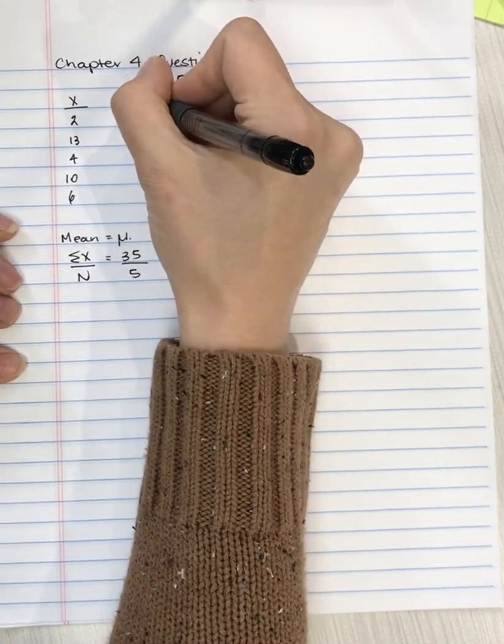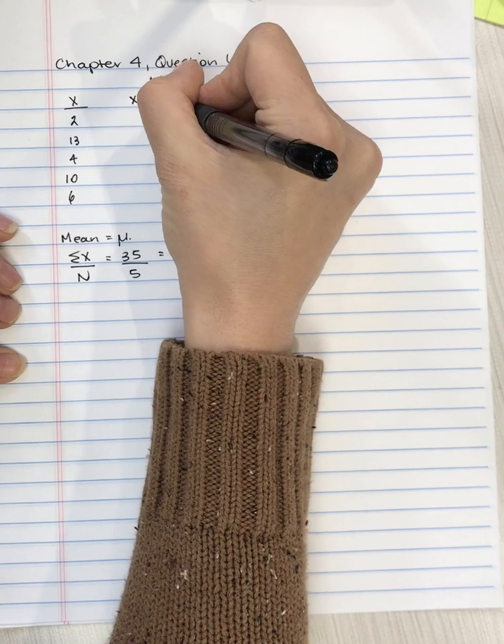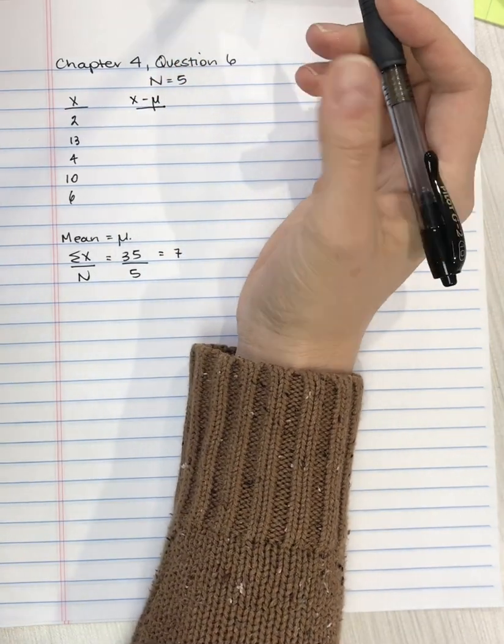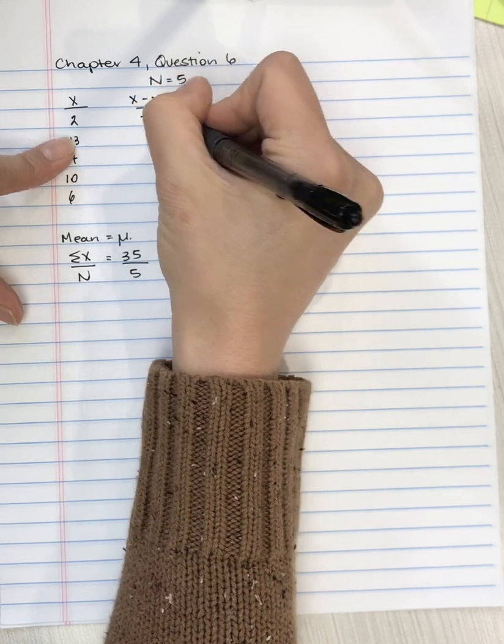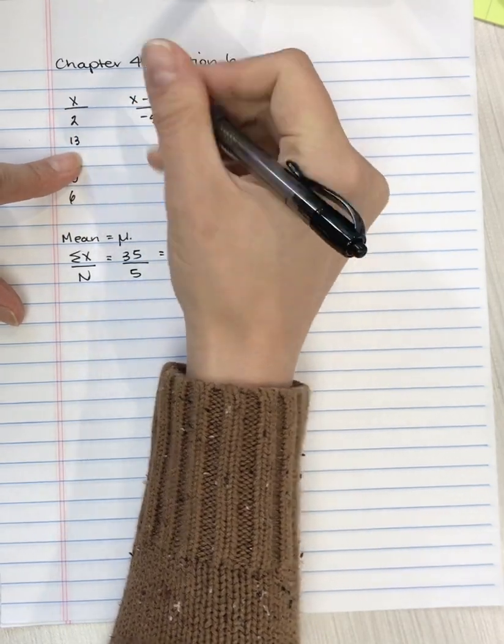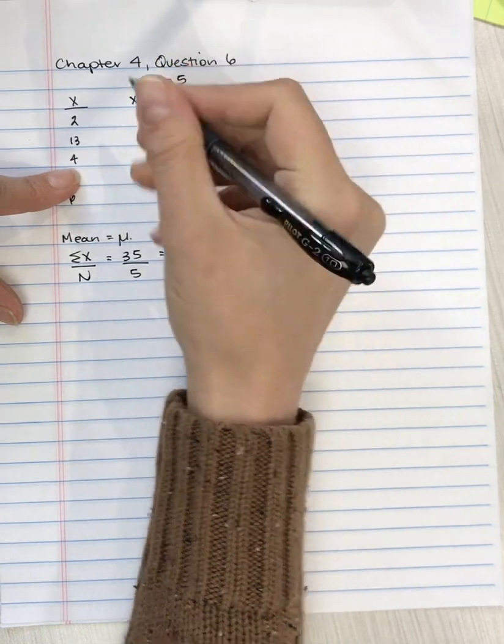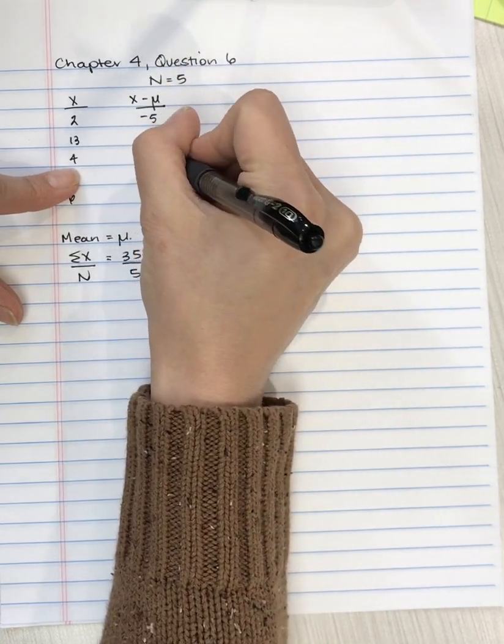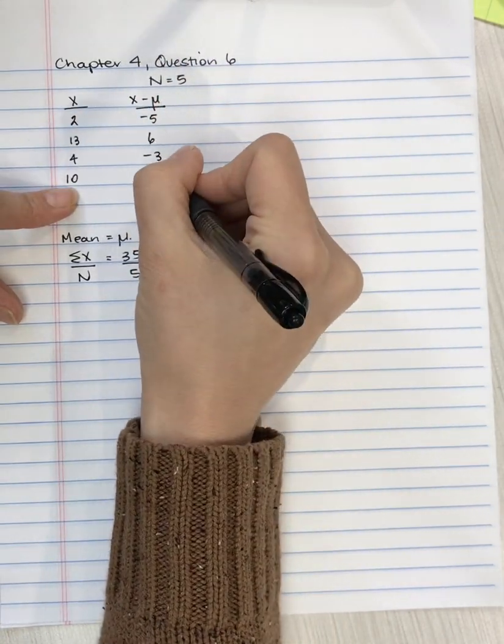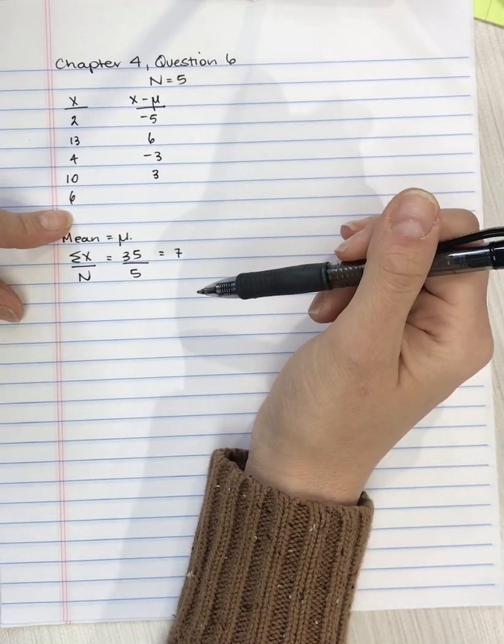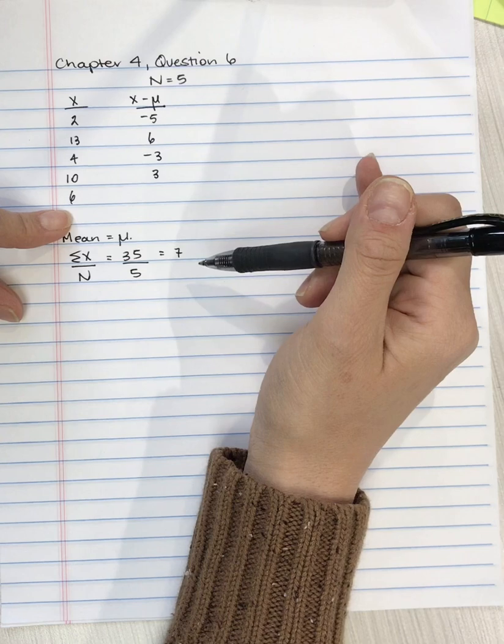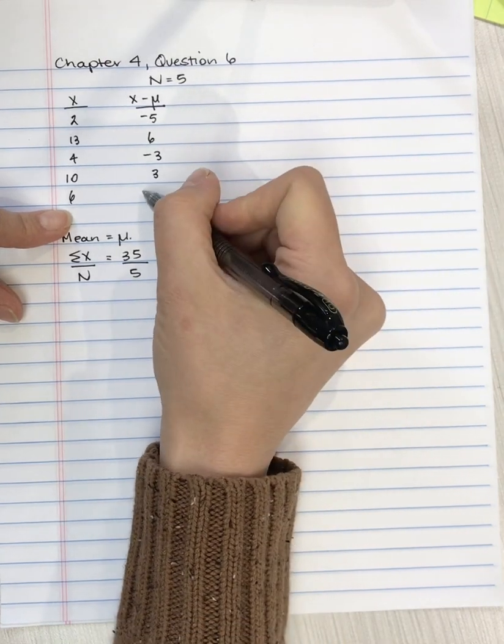So the next step is to take each score and subtract the mean for the definitional formula. So we're going to take 2 subtract 7, that's negative 5; 13 subtract 7, that's 6; 4 subtract 7 is negative 3; 10 subtract 7 is 3; and 6 subtract 7 is negative 1.